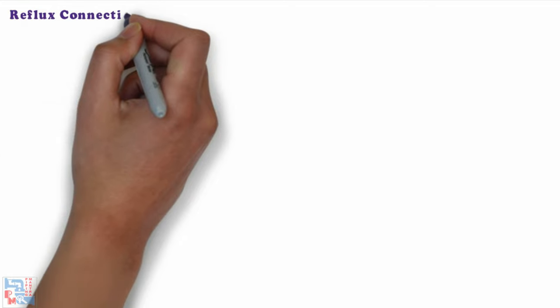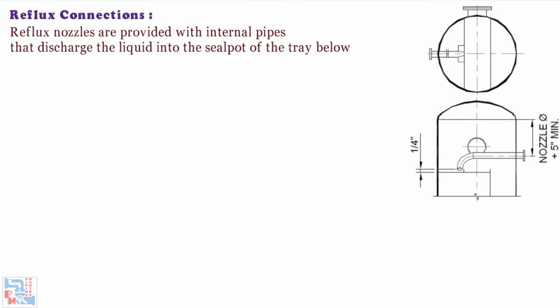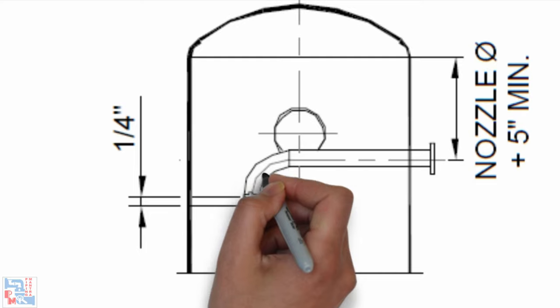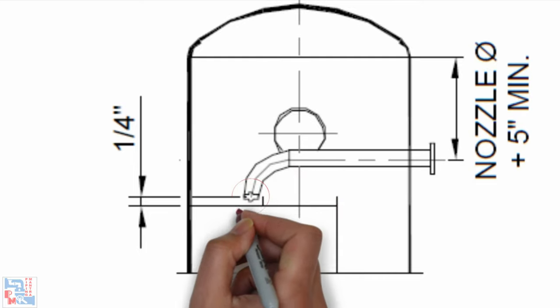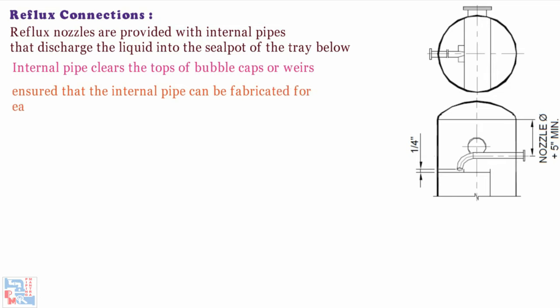Now comes reflux connections. Reflux nozzles are provided with internal pipes that discharge the liquid into the sealed part of the tray below. Pic shows the reflux connections. Care must be taken that the horizontal leg of the internal pipe clears the top of bubble caps or weirs. It must be ensured that the internal pipe can be fabricated for easy removal through a manhole or can be fabricated inside the tower shell.